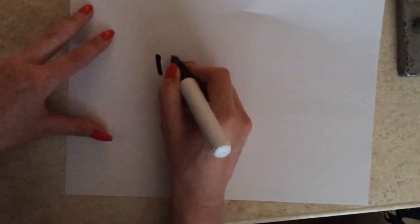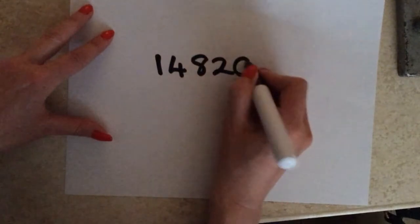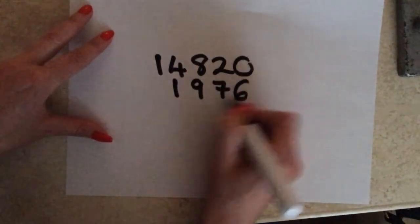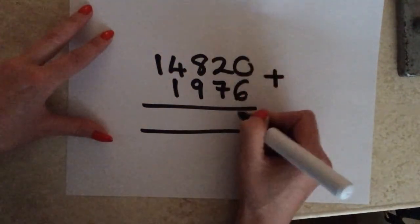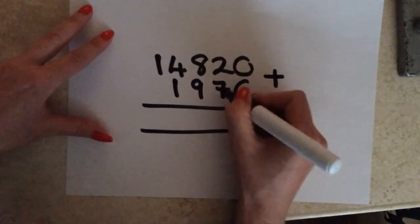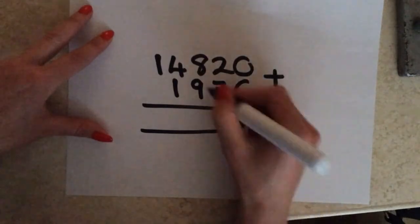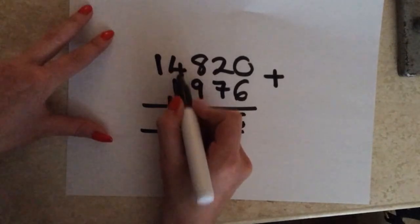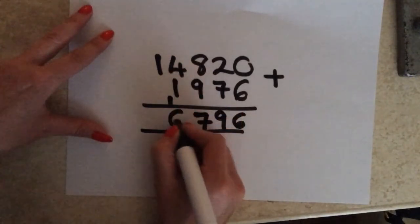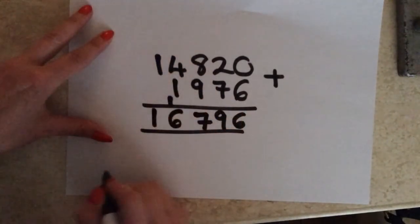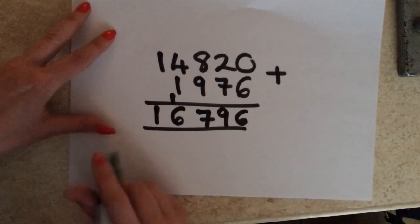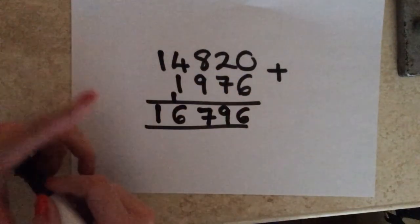So I'm going to add 14,820 and 1,976. You can see everything's lined up: 6, 7 plus 2 is 9, 9 plus 8 is 17 — carry that 1 over — 4 plus 1 plus another 1 is 6, and then your final 1 on the end. So that will be giving you a final answer of 16,796. If you're doing an exam paper, you've always got to make it really clear when you've got so many workings out what your final answer is.